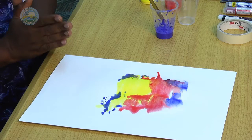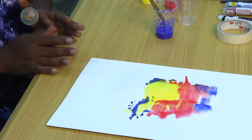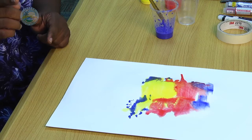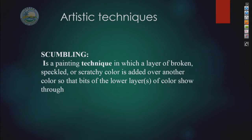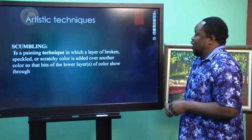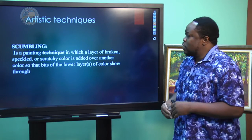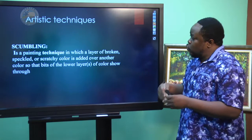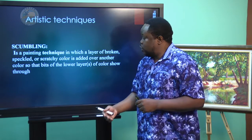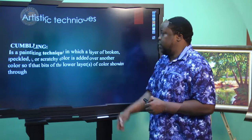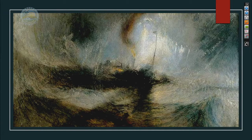The next technique is called scumbling, and it must be done using a dry brush. Scumbling is a painting technique in which a layer of broken, speckled, or scratchy color is added over another color so that bits of the lower layer — the underpainting — also show through. You're utilizing the underpainting again; remember, the underpainting is the first layer of paint applied to a surface. Here you can see an example of scumbling — at this point you would still see the underpainting showing through.